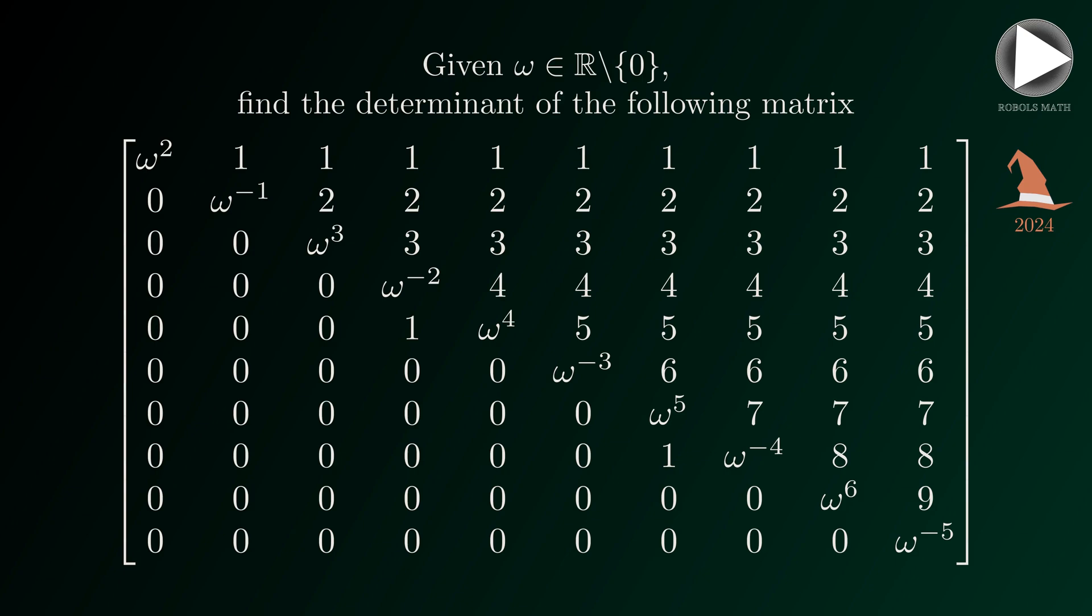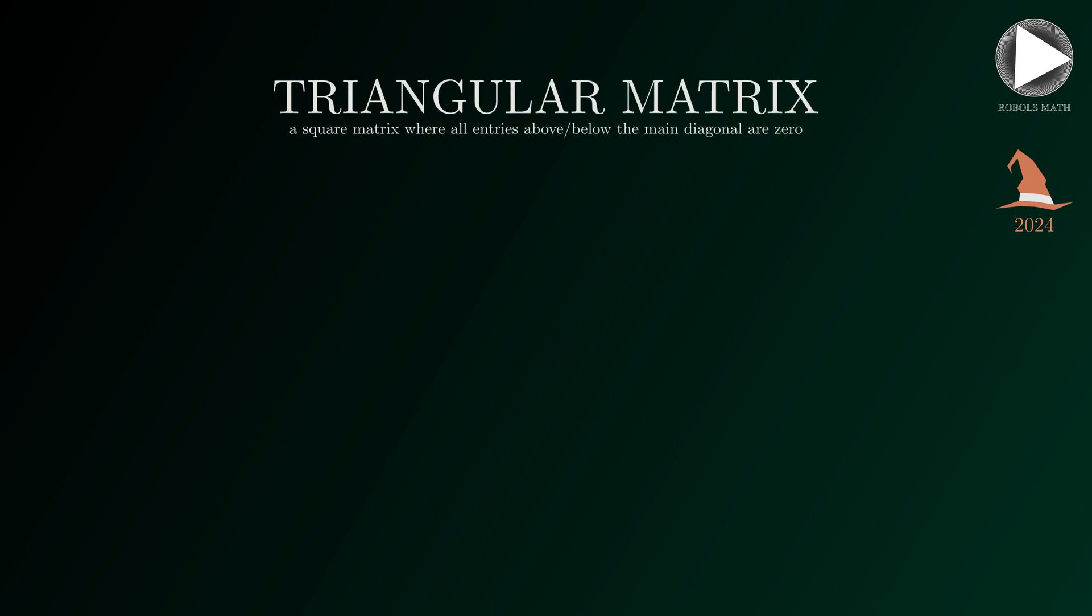The trick here lies in the fact that the given matrix looks very much like a triangular matrix. In case you're not familiar yet, a triangular matrix is a square matrix where all entries above or below the diagonal are zeros.